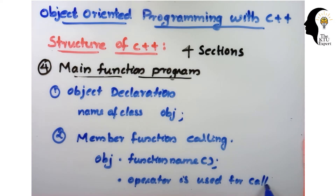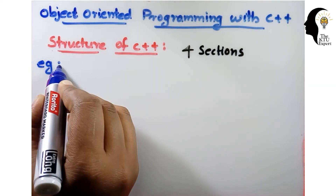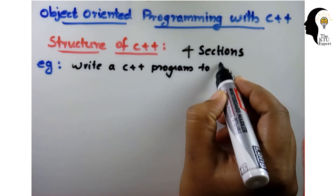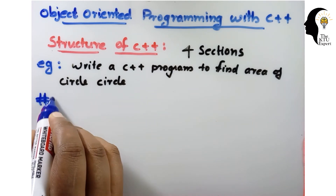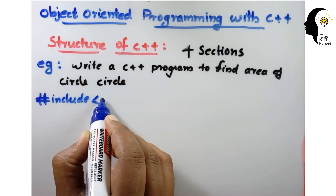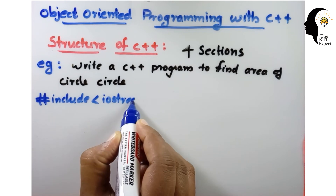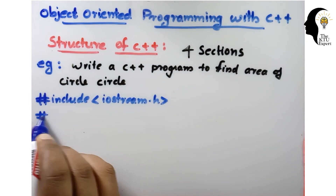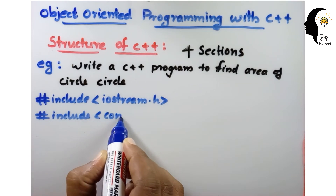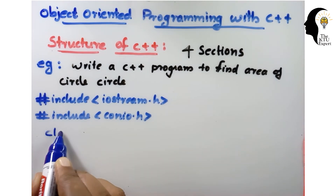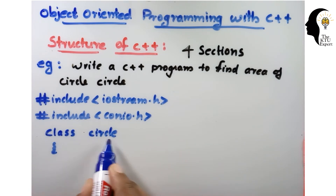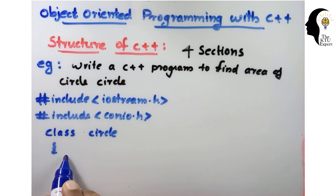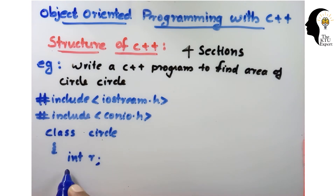Now we are going to look at an example: write a C++ program to find the area of a circle. First, we write the header files — hash include iostream.h and hash include conio.h. Then the class declaration: the class name here is 'circle'. In the private section, we declare int r and float area.